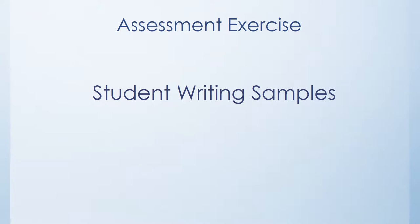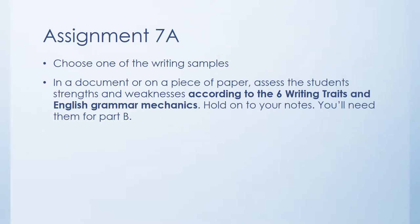So here's where we look at some writing samples. There are two parts to the exercise that's going to come up for you, so this is a good opportunity to get out a piece of paper and a pencil and take some notes. You're going to look at three writing samples. Choose one of those samples and assess the student's strengths and weaknesses according to the six traits of writing and English grammar mechanics. Hold on to your notes, because there's a second part and you'll need them.